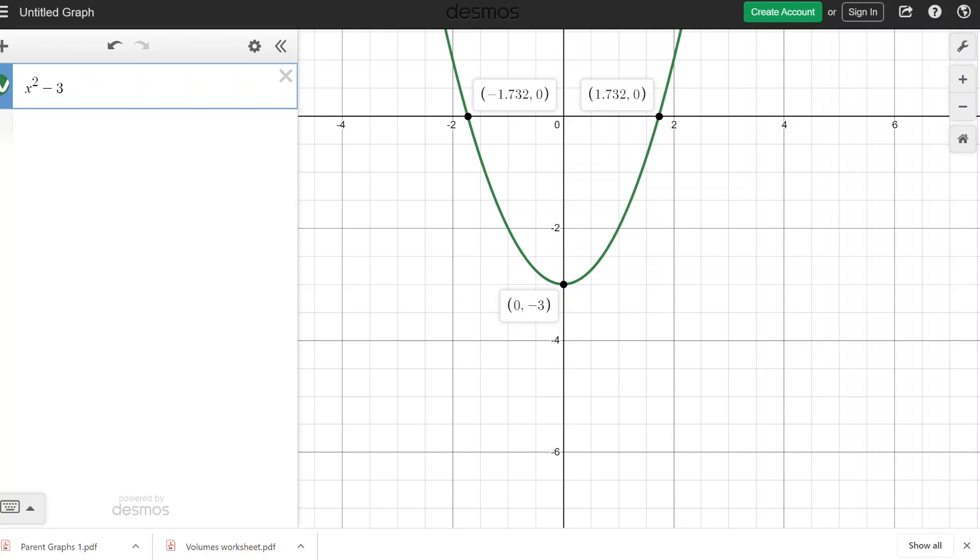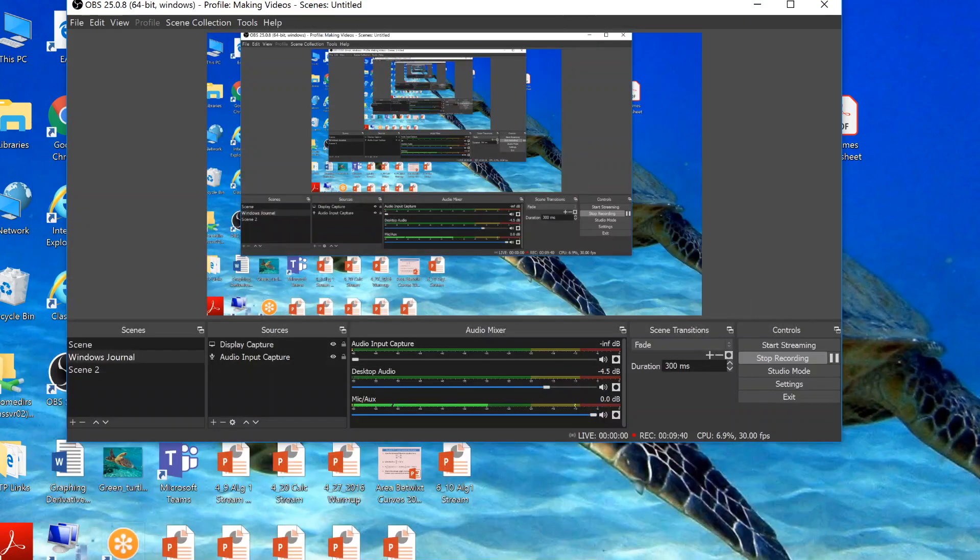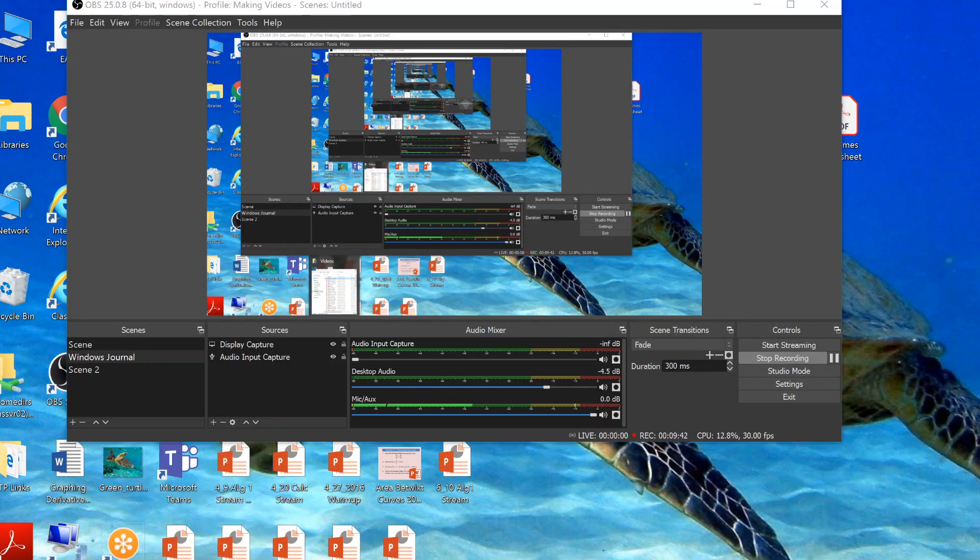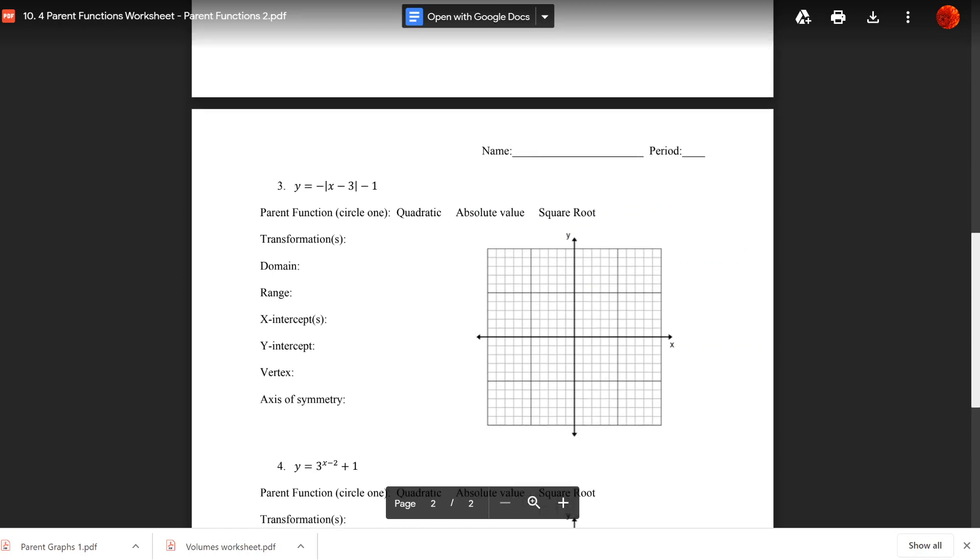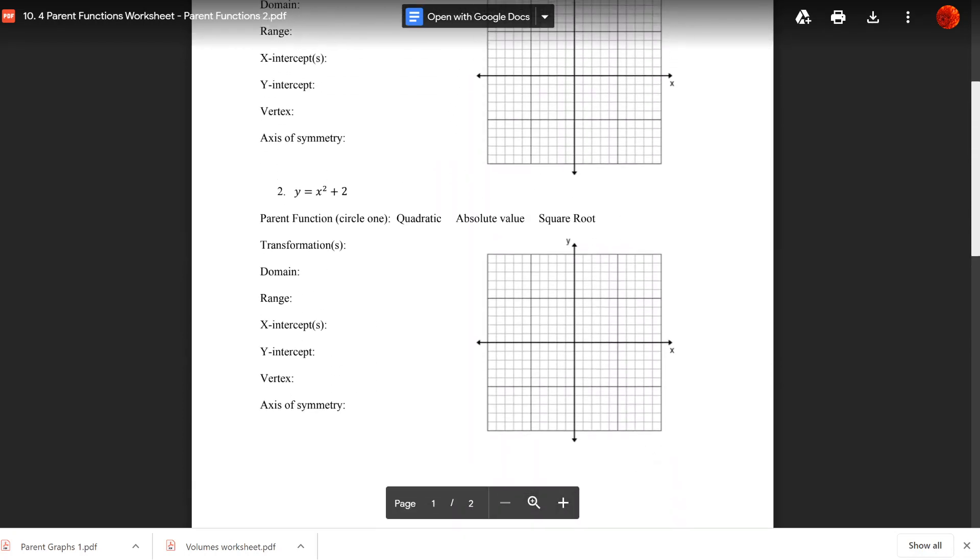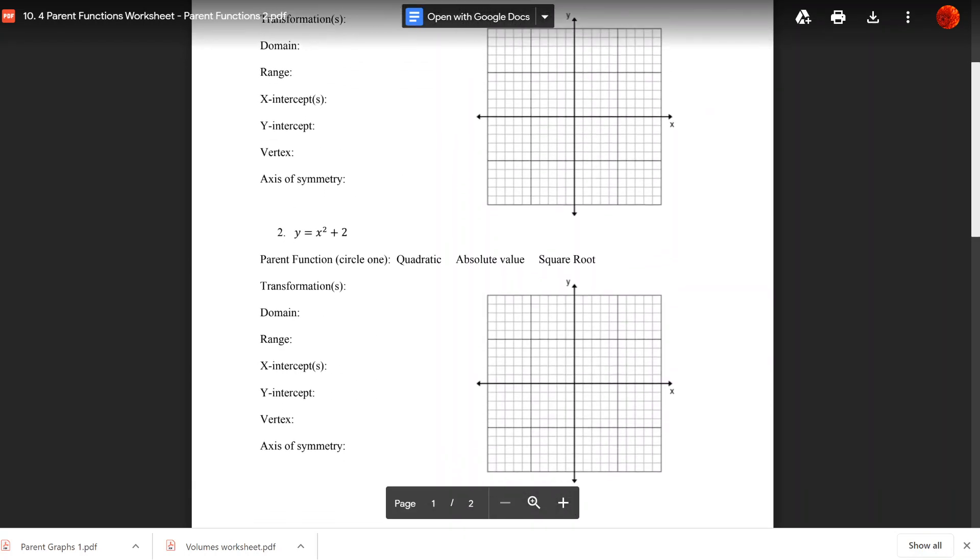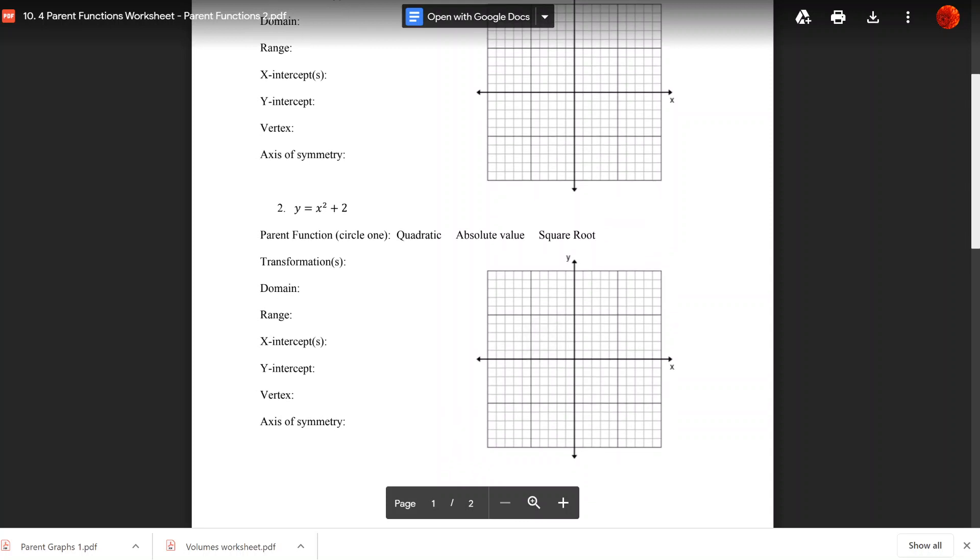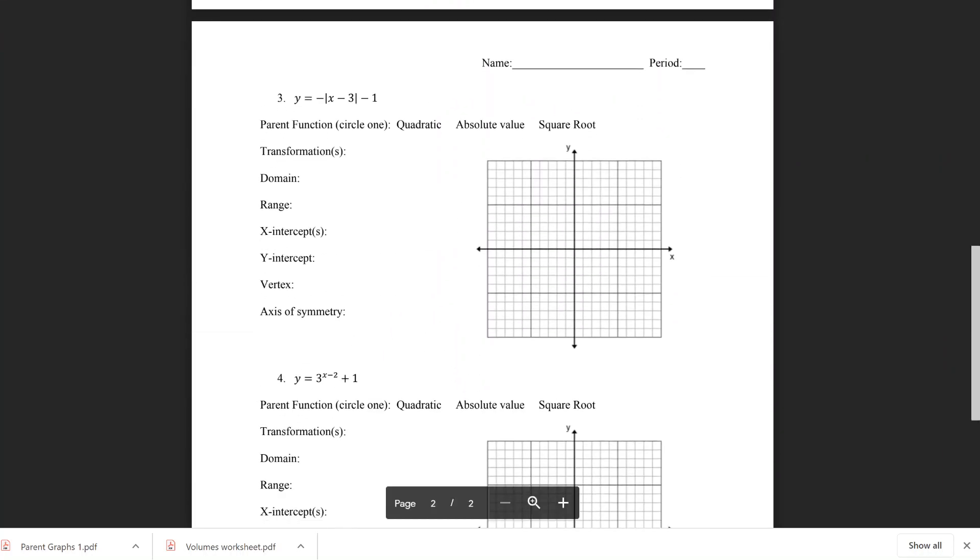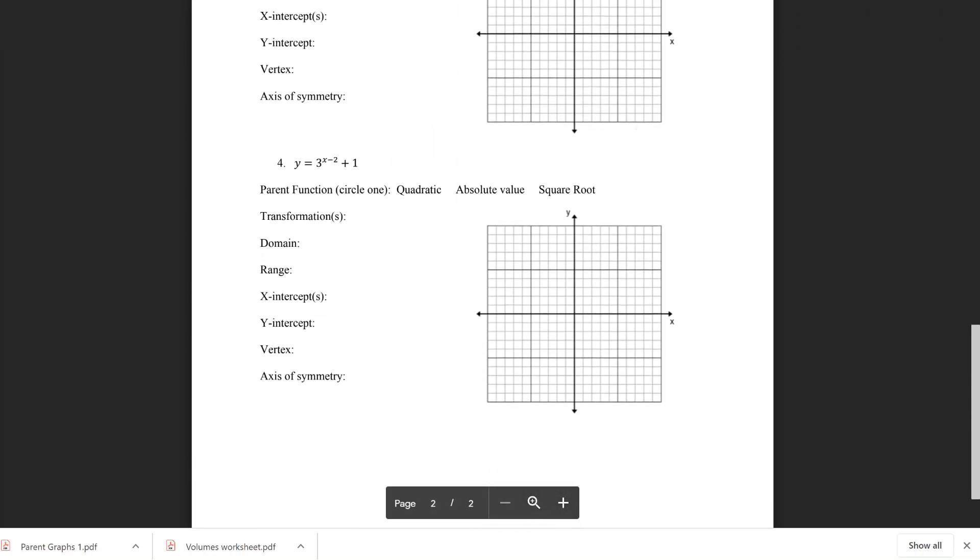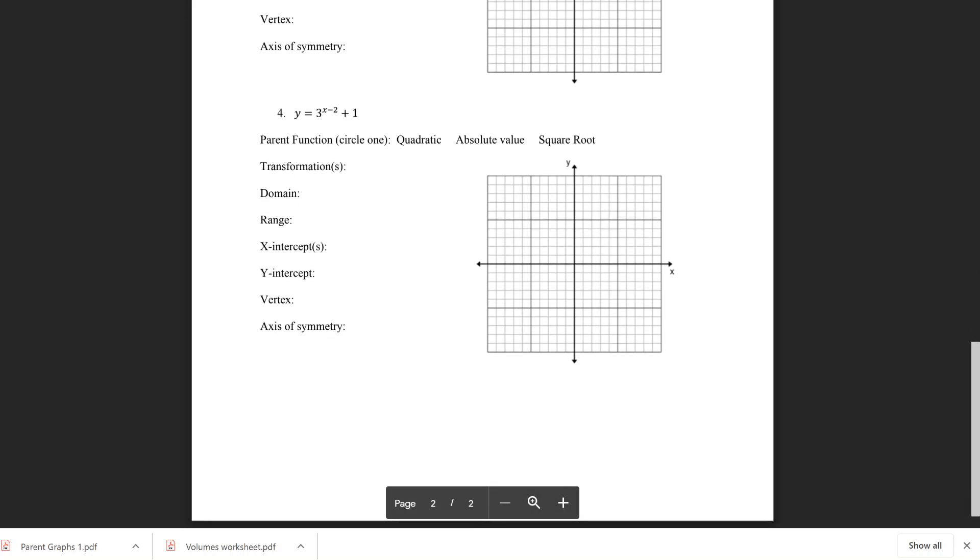So, Desmos can help a ton with graphing these. A ton, a ton, a ton. You can check every single one of your answers here. If you look at the other questions on here. You notice that they ask for things like, where's the vertex? That's pretty easy to find. That's just the bottom of your parabola. It asks for domain and range. Which we have talked about a fair amount. We didn't throw any curveballs your way with domain and range. Except maybe the exponential one.